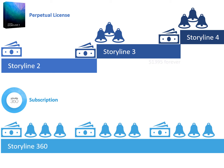The perpetual license for Storyline 3 is $1,395 and you can use it for as long as you want. Typically when there's an upgrade the cost is about 50% of the full price, so about $700. The Storyline 360 subscription is $995 for the year. When it comes time to renew we don't actually know if it will be the same price or not. Since the subscription model is less than a year old, we don't know if they'll offer any discounts for renewals.